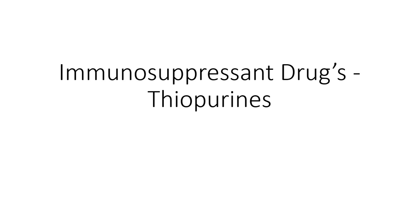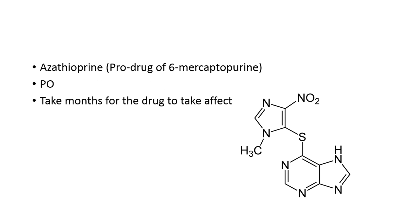Welcome to our second video lecture on immunosuppressant drugs. Today we'll focus on thiopurines. An example of a thiopurine is azathioprine, which is a prodrug of 6-mercaptopurine. If we look at the structure of azathioprine, we can see that it resembles the purine nucleotide.